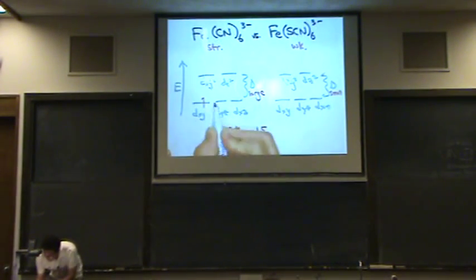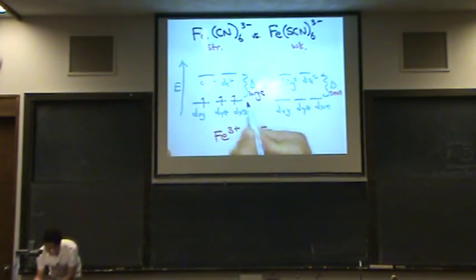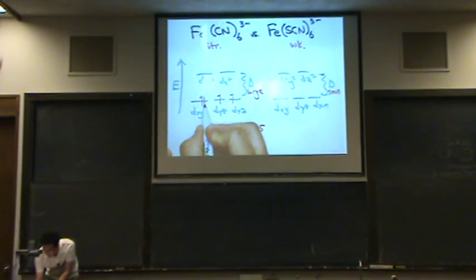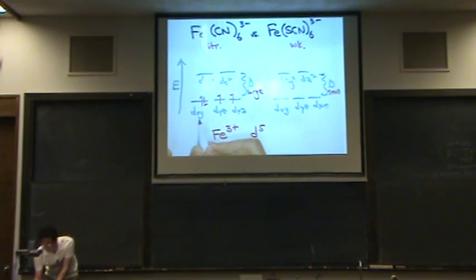So 1, 2, 3. Now delta is large, that means the next one will go down low. It's too large, these electrons go up high. So 1, 2, 3, 4, 5.